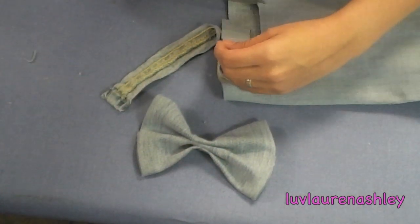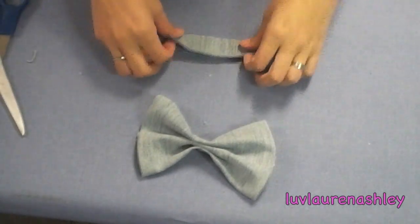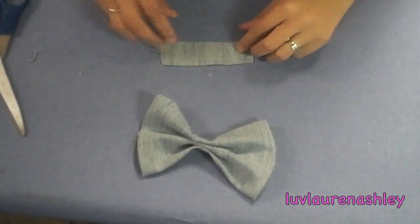And then what I'm doing here is just taking a strip just like I did for the first bow. And then I'm going to glue the edges as well so that it doesn't fray.